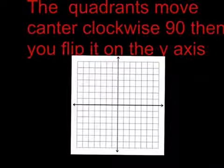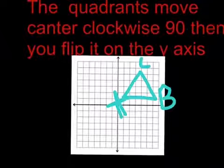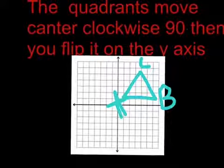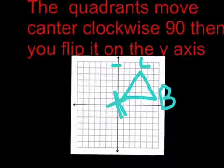Now that we have the triangle plotted onto the graph, it is asking us to move it five units to the left and one unit up, so we will move it over here.